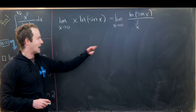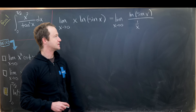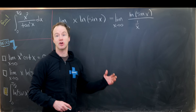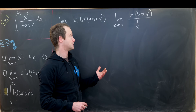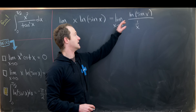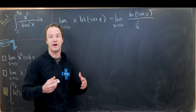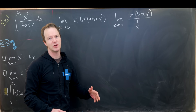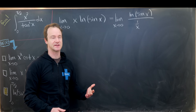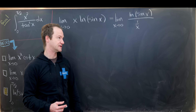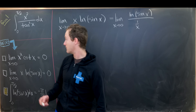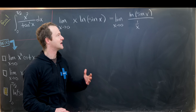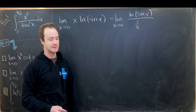As x→0, sin(x)→0, and the natural log of an argument tending toward 0 from above — which it does since this is inside our integral — equals −∞. So the numerator tends to −∞.